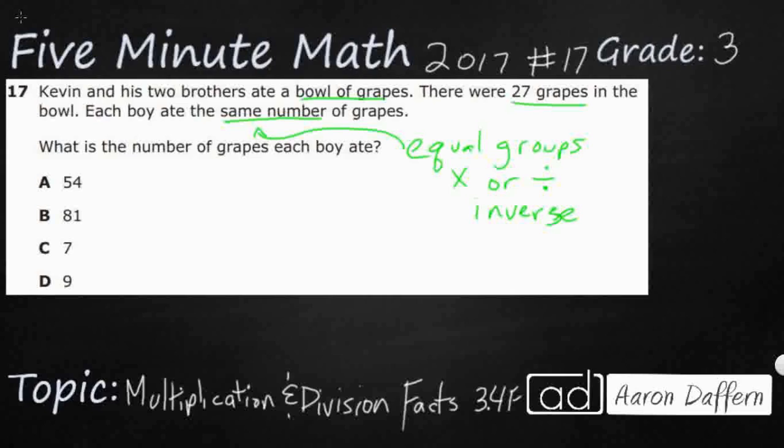Now, we have Kevin and his two brothers and they're eating 27 grapes. What I'm going to do is I'm going to start with a strip tie diagram here. And I'm just going to draw, because this is my total. It says there are 27 grapes in the bowl. So I'm just going to put 27 up here. So when the number says, what is the number of grapes that each boy eats? Well, how can a boy eat more than 27 grapes if there's only 27 grapes?